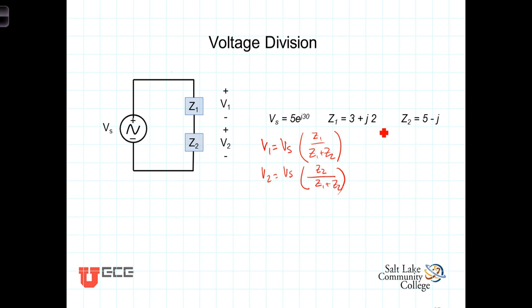Let's do an example using these values right here. V1 is equal to Vs times Z1, which is 3 plus j2, divided by Z1 plus Z2, or 3 plus j2 plus 5 minus j. And when we go through and do the math on that, we get the product of those is 2.24 e to the j 56.57.